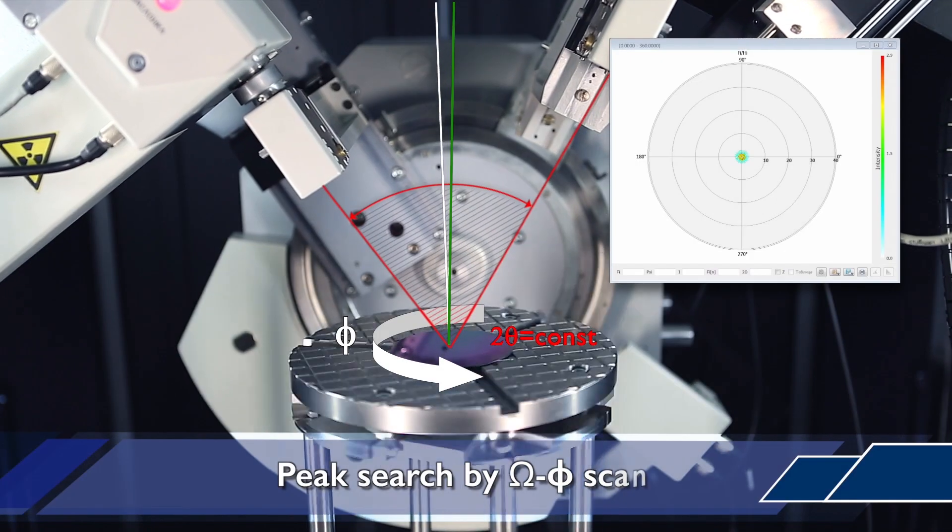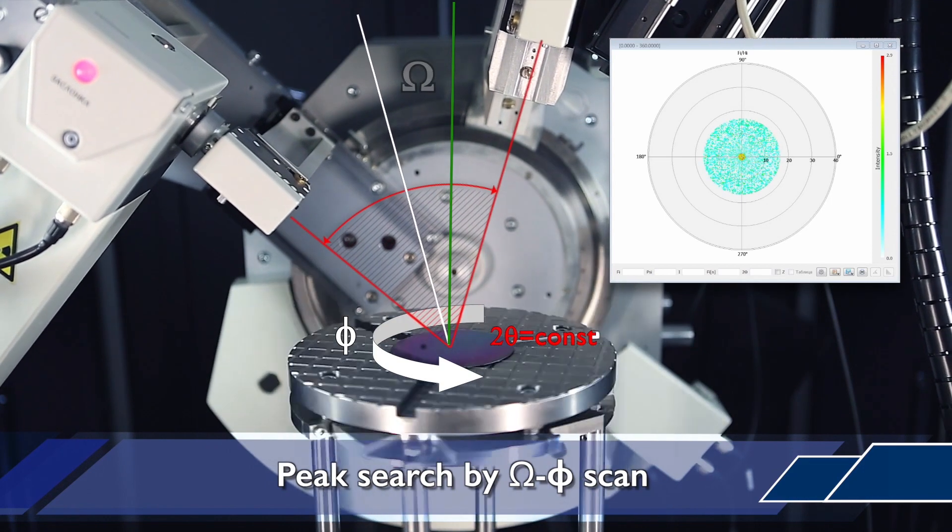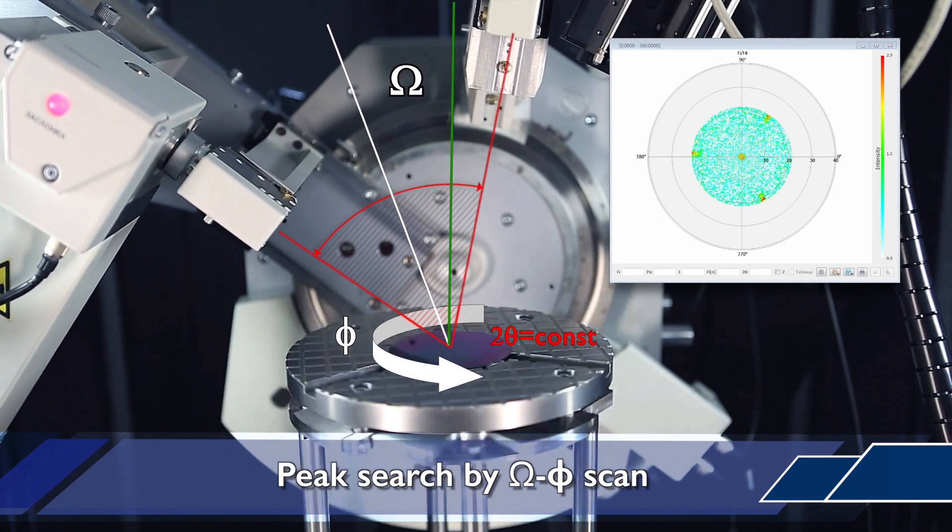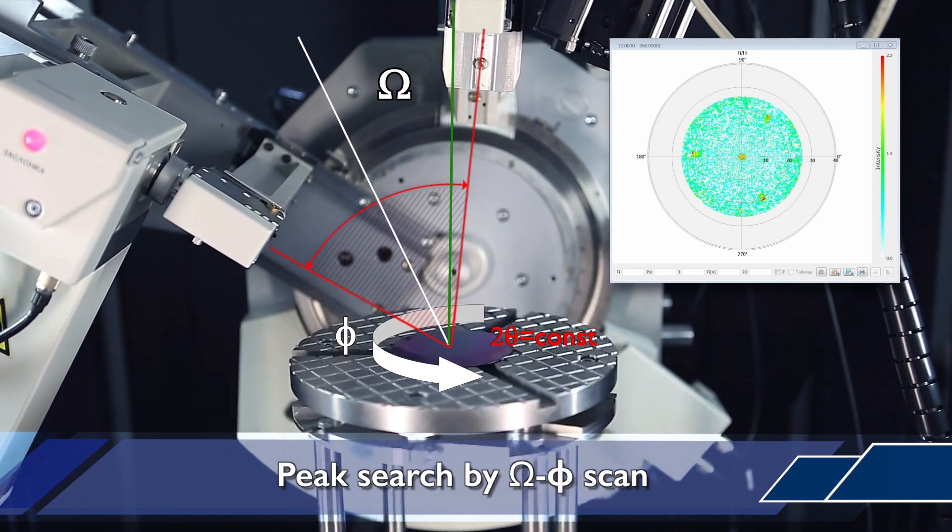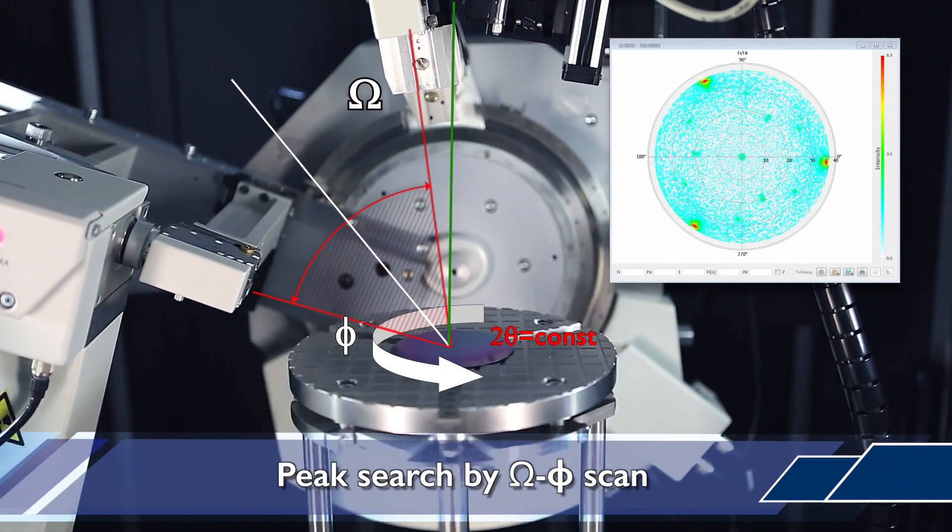One more important task which can be easily solved with the Drone 8 diffractometer, equipped with the holder for large samples, is the determination of single crystal orientation. Peak search by omega-phi scanning usually takes a minute.